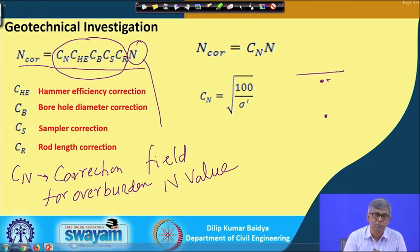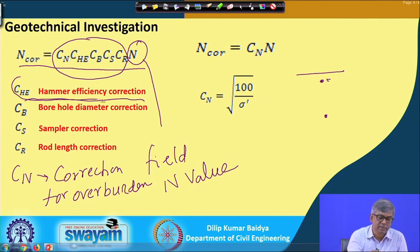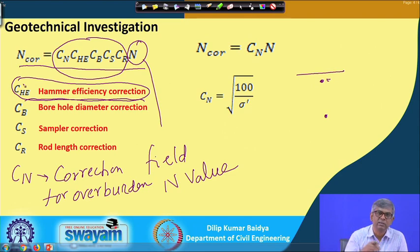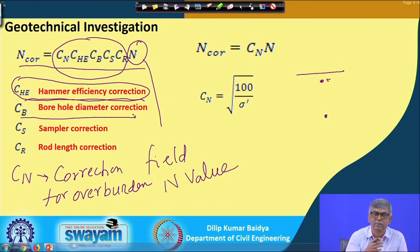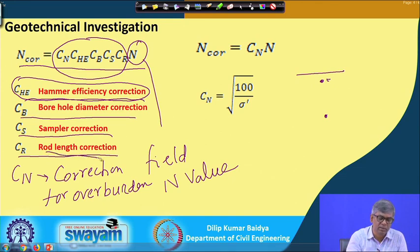So the N value is influenced by overburden and must be corrected. Another correction is the hammer efficiency correction — when lifting and falling the weight there is always some friction, so the full energy of 65 kg × 750 mm may not be fully transferred. There is also a borehole diameter correction, a sampler correction, and a rod length correction. If the borehole is too deep, many rods must be connected to reach the surface, requiring a rod length correction.